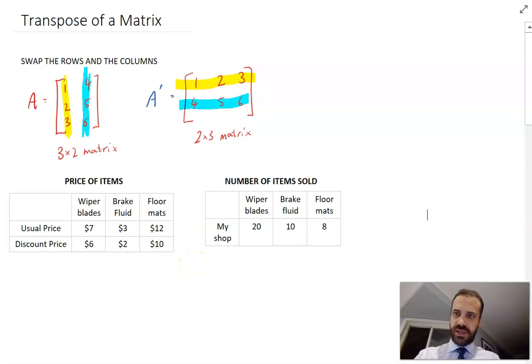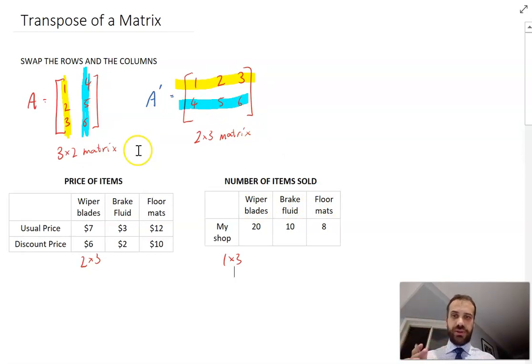Now look at these matrices. This is a 2 by 3 matrix, and this is a 1 by 3 matrix. Now I can't take those two matrices and combine them together, even though you can see they have similar headings here and here. However, if I take the transpose of one of those matrices.